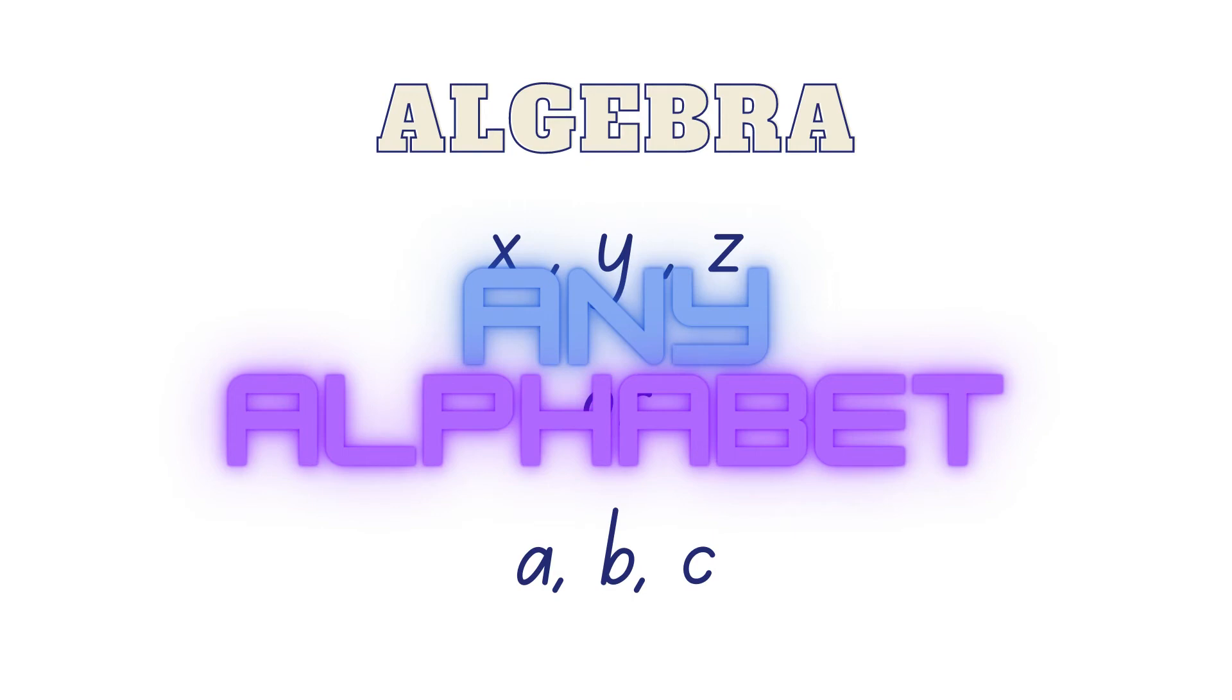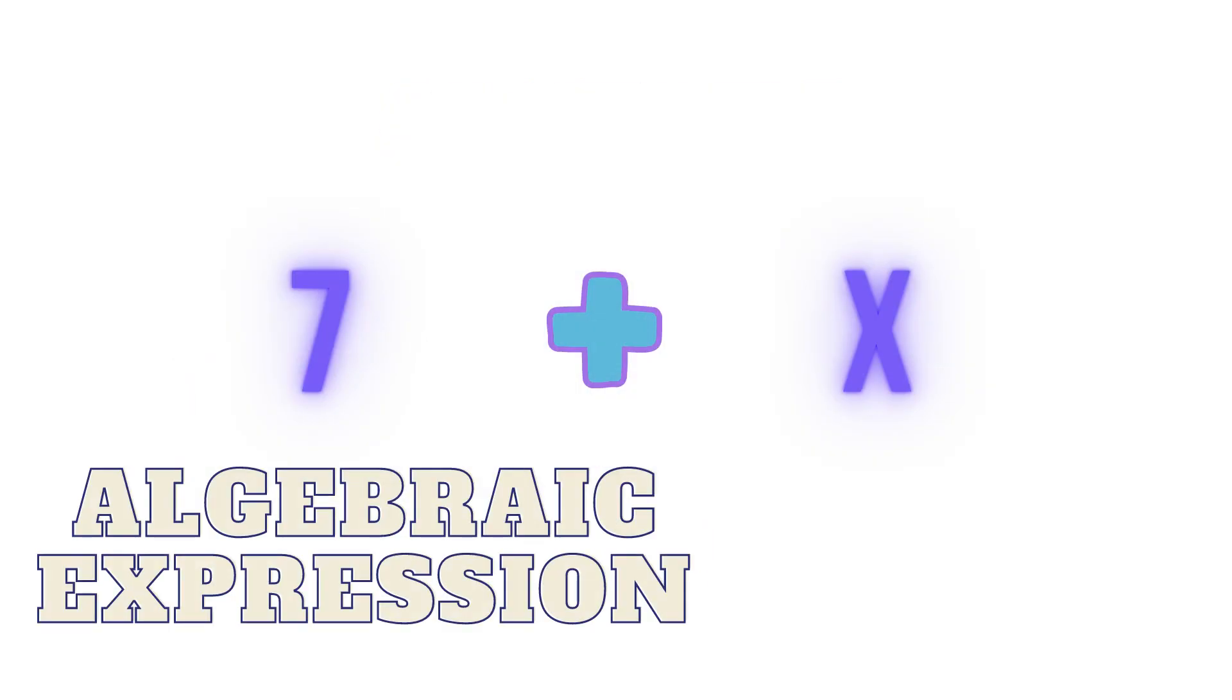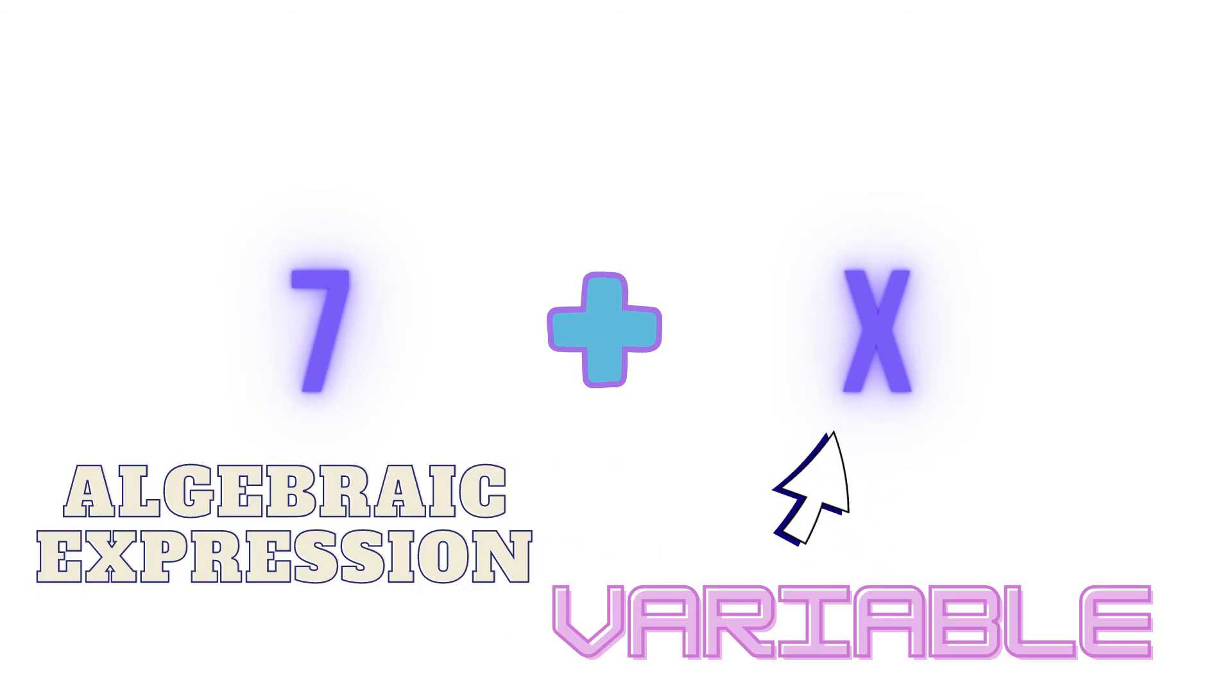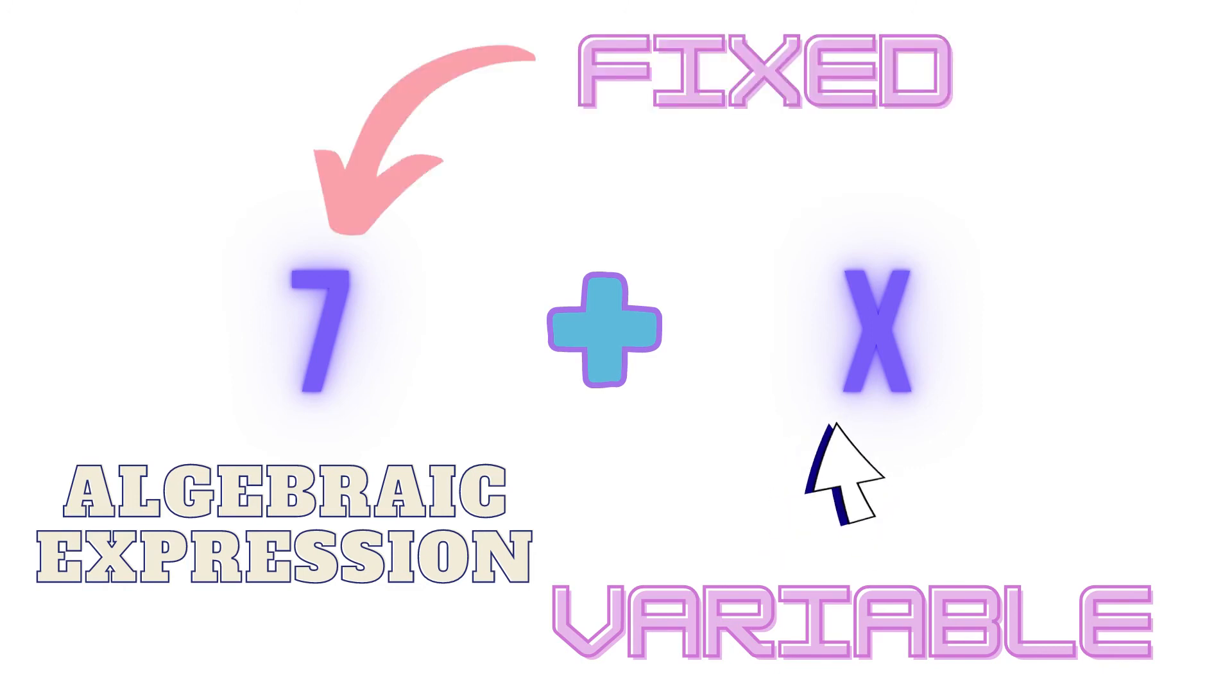So if we rewrite our mathematical expression in an algebraic form, we can write it as seven plus X, where X represents the same extra working hours, the variable quantity, and seven represents the fixed quantity of everyday working hours.